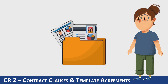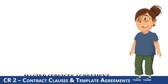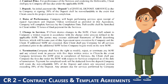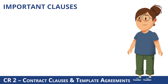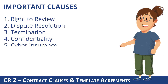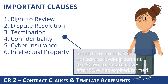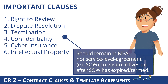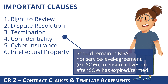There are a variety of contract templates that can be created. The most common is the Master Services Agreement, or MSA. This template includes important clauses beneficial to TPRM practitioners, such as the right to review, dispute resolution, termination, confidentiality, cyber insurance, and intellectual property clauses. Clauses that address the relationship should remain in the MSA and not in a service level agreement such as a Statement of Work, or SOW, to ensure they live on after an SOW has expired or terminated.